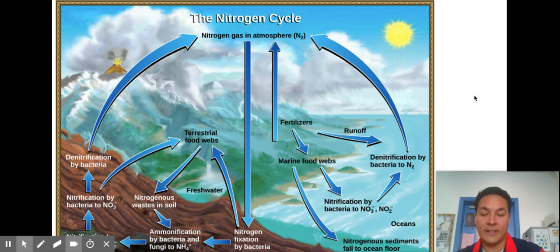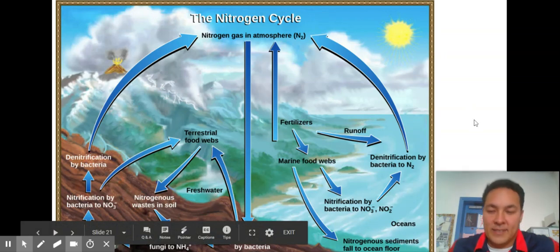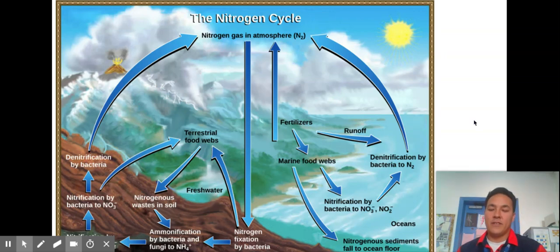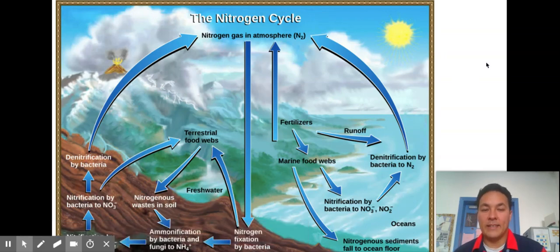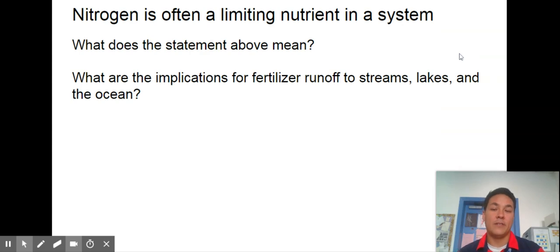The nitrogen cycle can look scary with ions and chemicals in it. Just know that we need nitrogen-fixing bacteria to make nitrogen usable by plants. Then that nitrogen that's usable by plants, we eat plants and we need nitrogen to make two things. We need nitrogen to make DNA, which is full of nitrogenous bases, and we need nitrogen to make proteins. The human effect is that we are putting down massive amounts of nitrogen fertilizers. Those fertilizers contain nitrogen and phosphorus and they are often limiting nutrients in a system. Can you talk about what is a limiting nutrient and what are some implications for fertilizer runoff to streams, lakes, and the ocean?